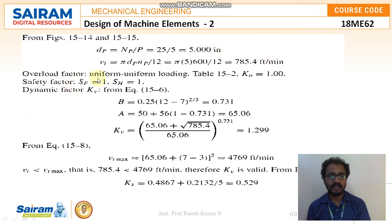Now the overload factor, that is uniform loading from the table 15.2 where the service factor is 1 which is already given in the question also. So we need not to take it. In case if it is not given we need to take the value from the table 15.2. The service factor, sorry safety factor which is given as 1 for both SF and SH in the question itself. And moving to the dynamic factor from the equation 15.6.